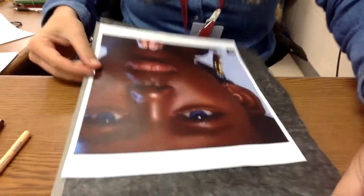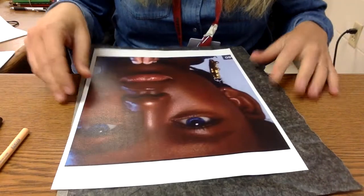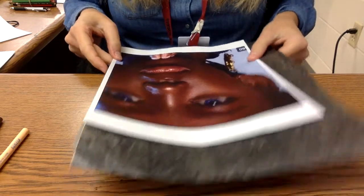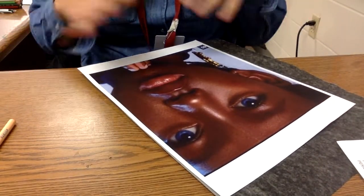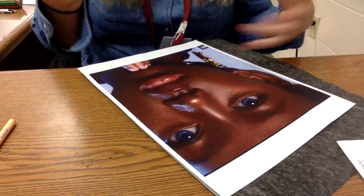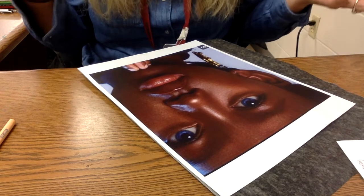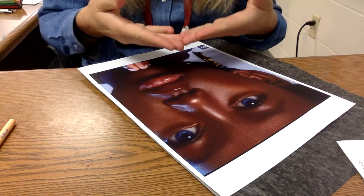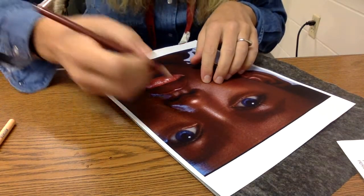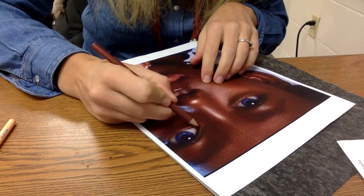To start your skin tones piece, you are either going to transfer by coloring on the back of this with pencil or using transfer paper, but you're going to transfer your person onto a darker sheet of paper. There's either a green sheet or a red sheet or a brown sheet or a tan sheet. That's the sheet that you want to use because colored pencil layers better on a colored piece of paper.